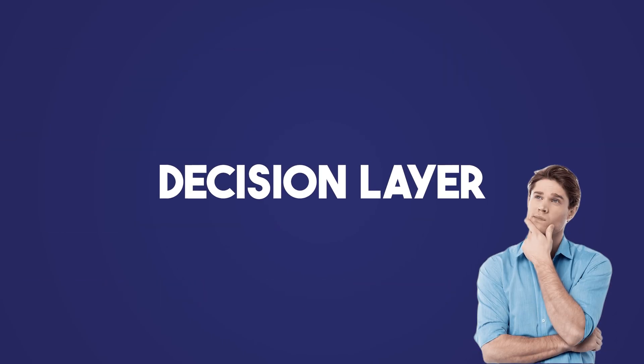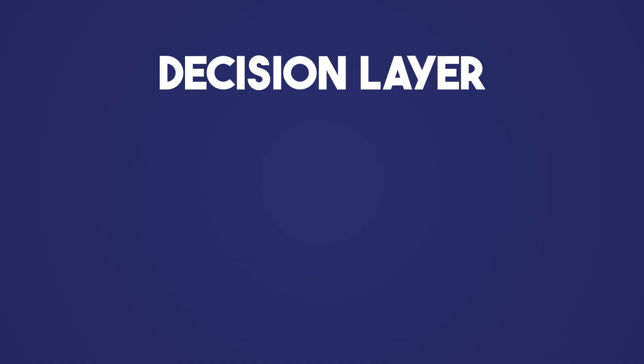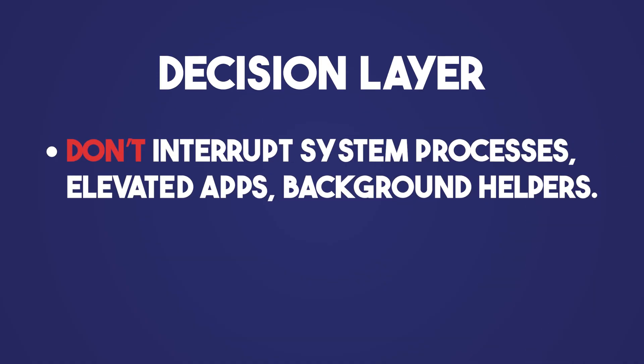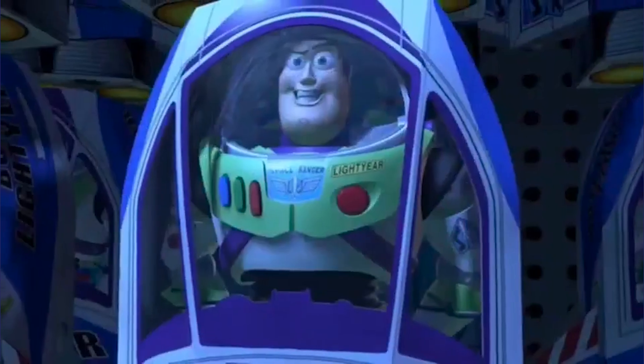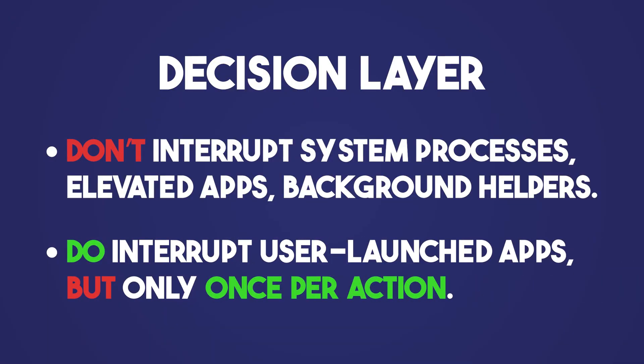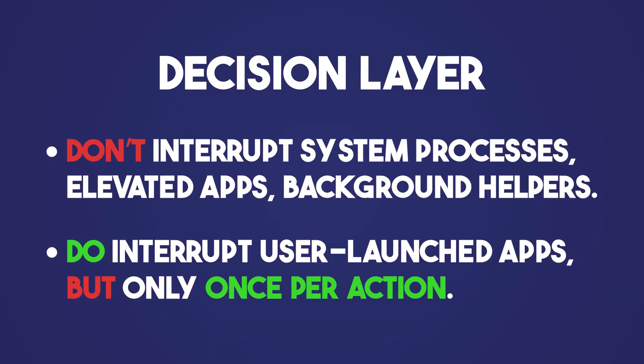Then there's the decision layer. Given an event, decide whether to interrupt. Is it a system process, an elevated app, a background helper? If so, ignore. If it's a user-launched app — and this matters because many apps, if started, launch multiple processes in the background — you may want to troll them, but if you don't select exclusively processes started directly by the user, you will end up spawning tens of challenges for the same operation.